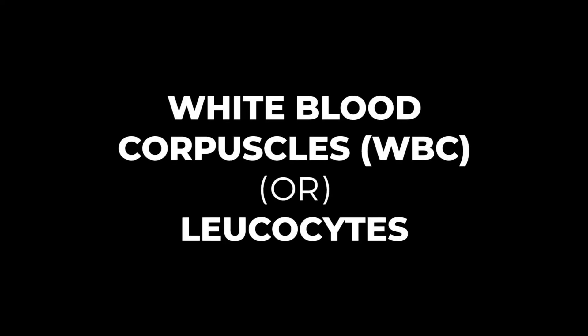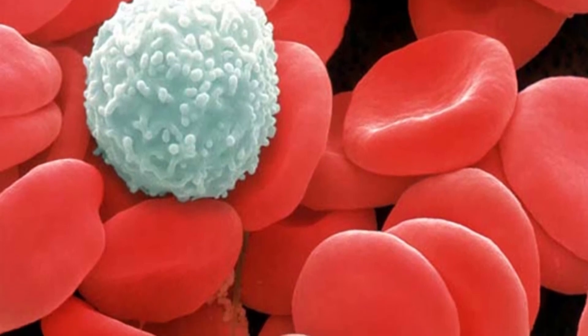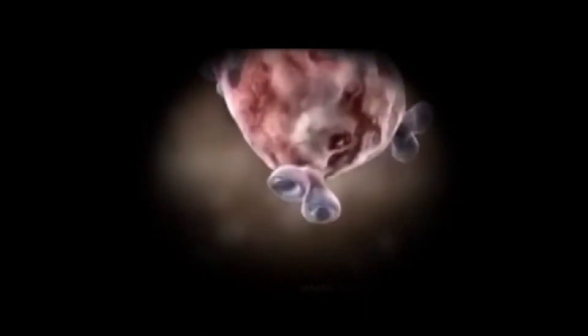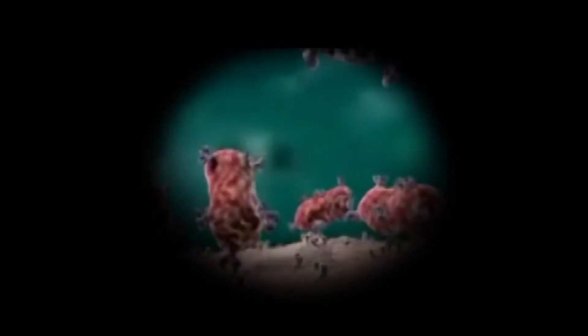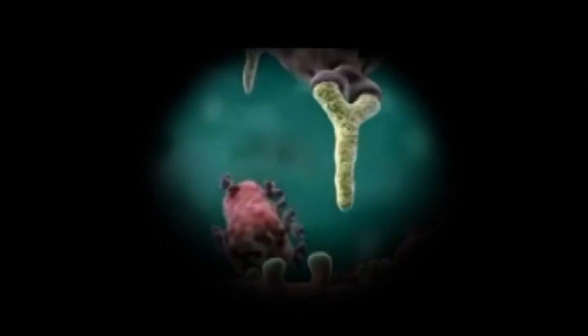White Blood Corpuscles. These are clear cells lacking hemoglobin. They are nucleated cells exhibiting amoeboid movements. They protect the body against invading microorganisms and remove dead cells from the body.